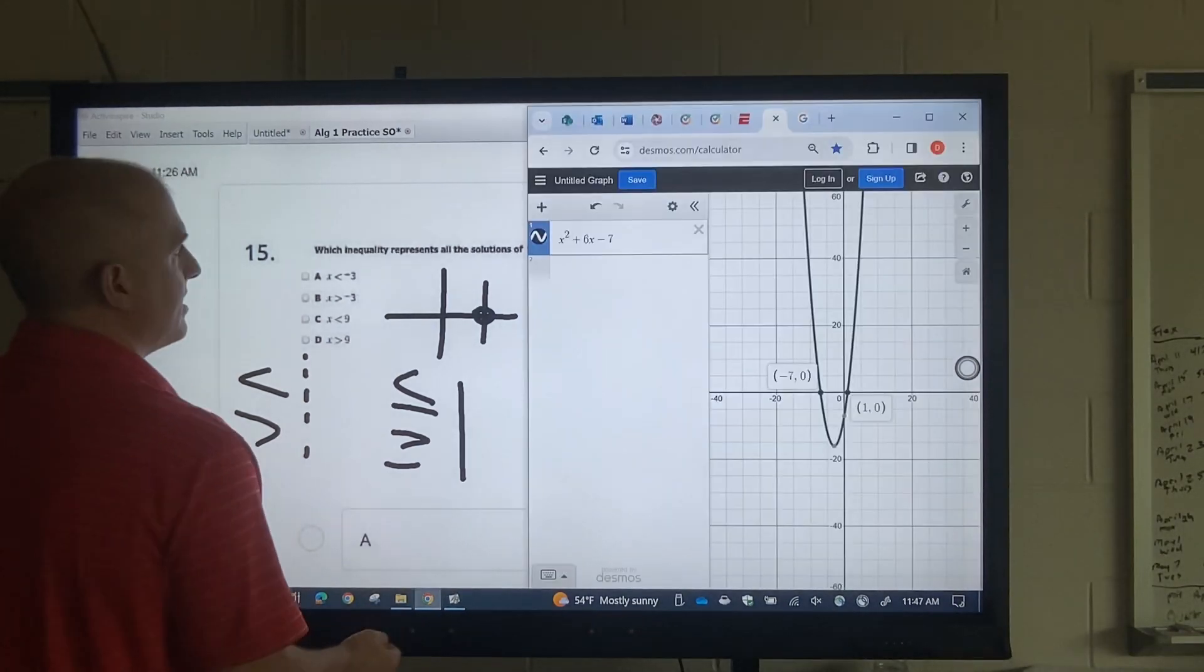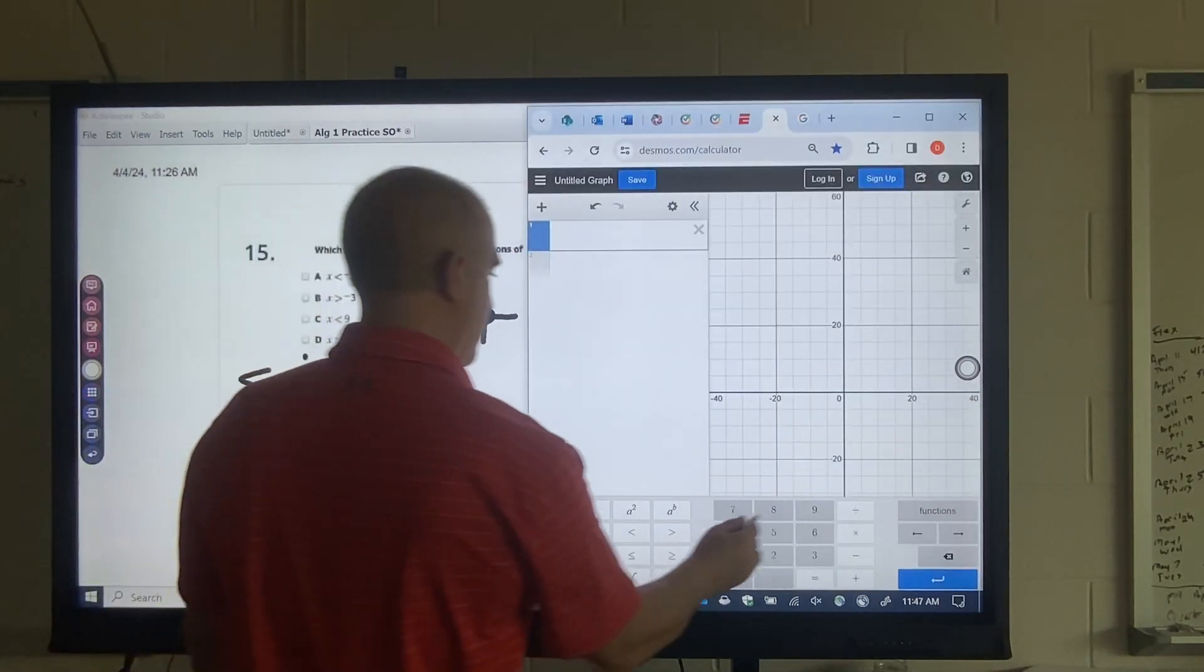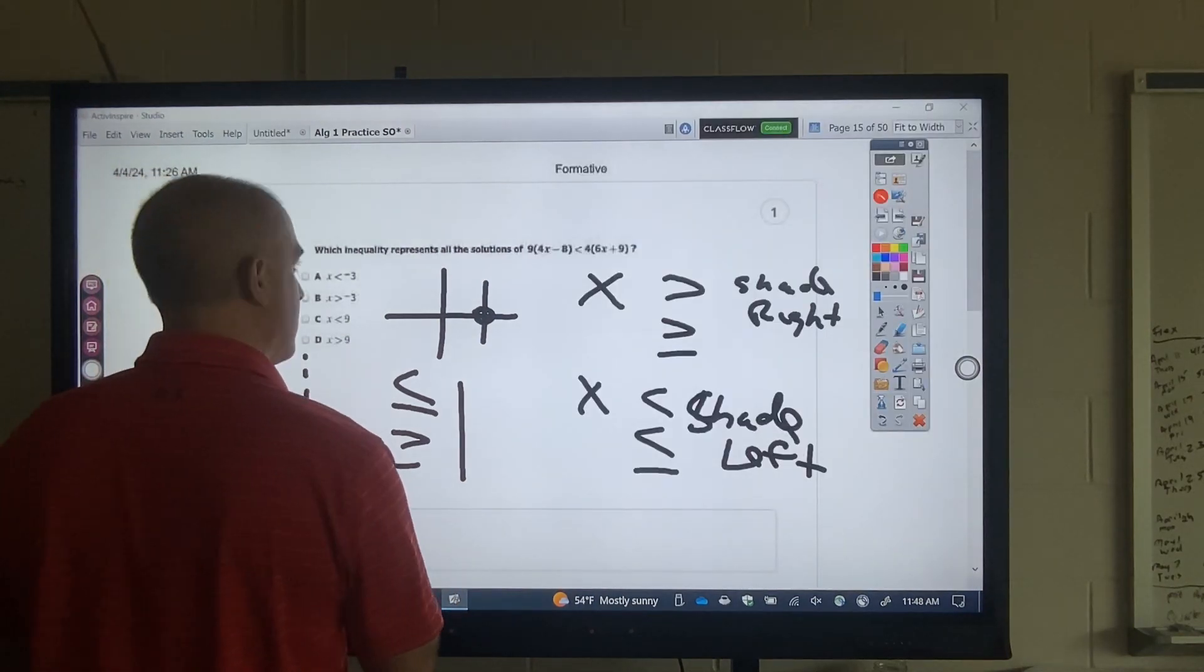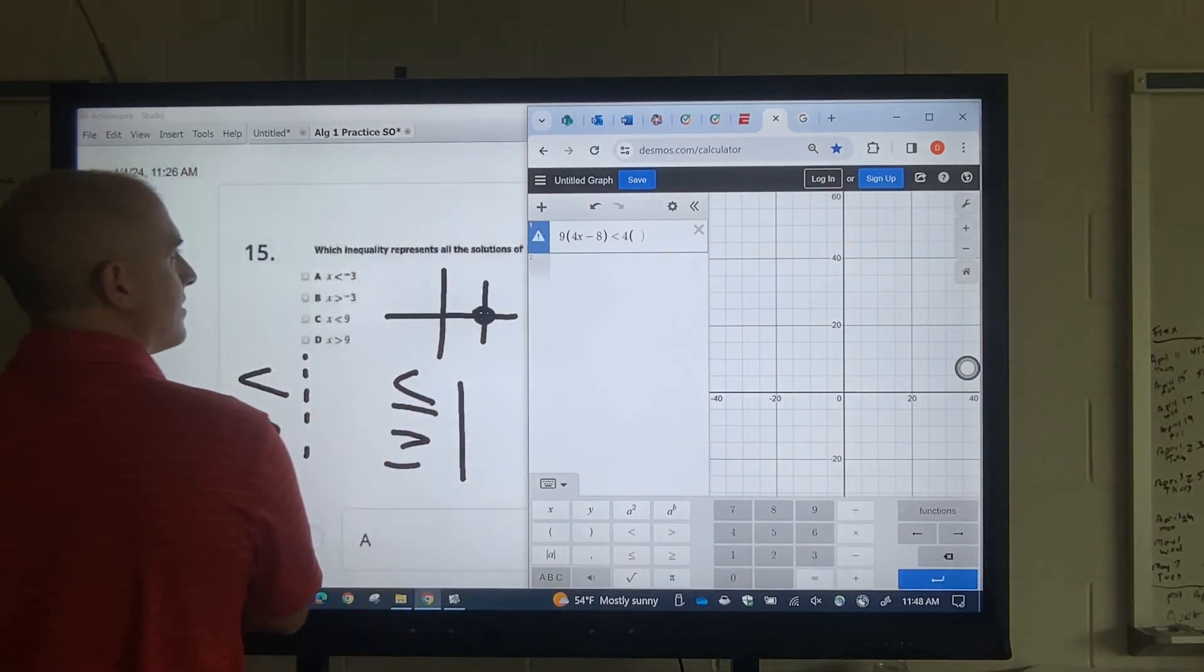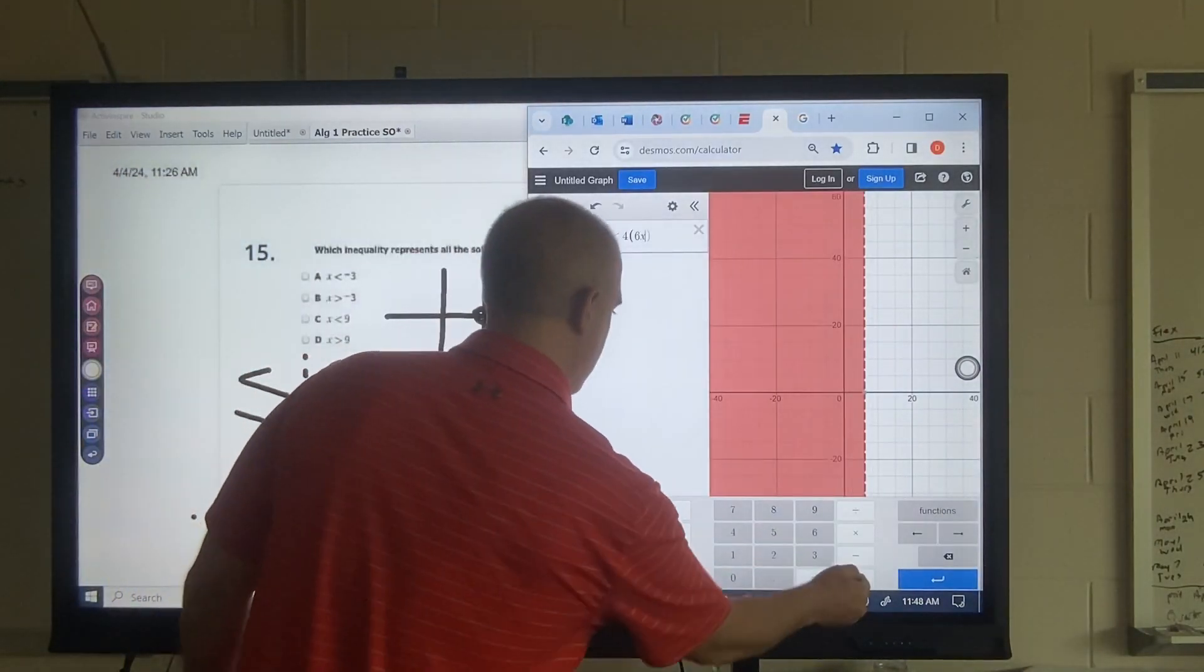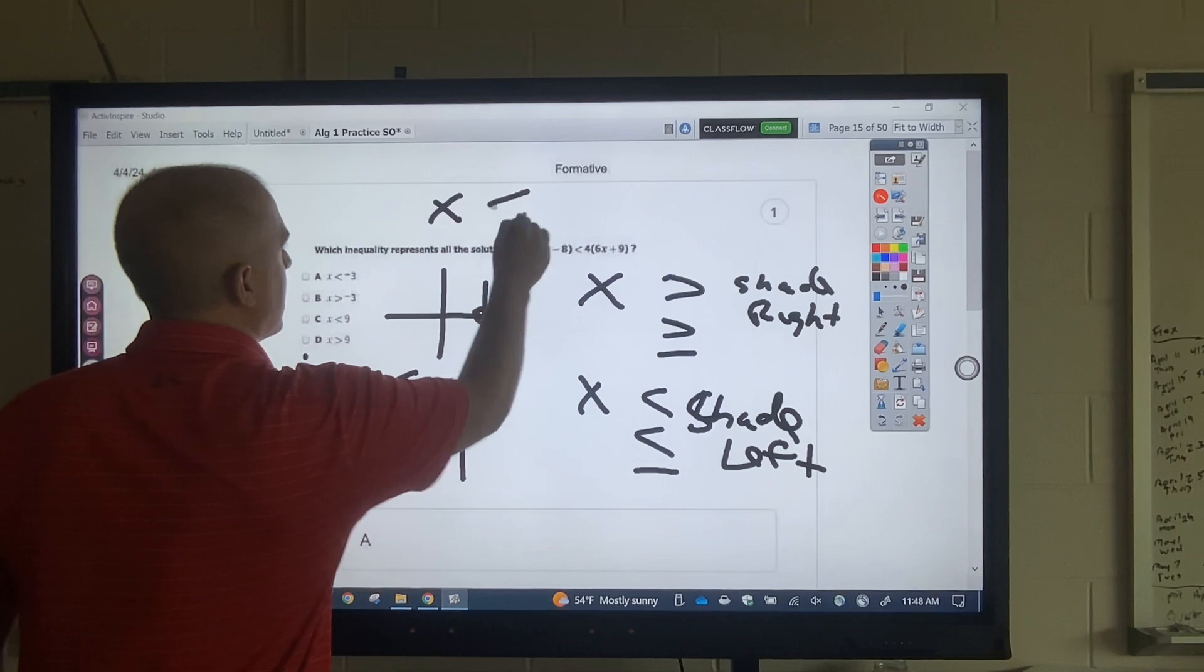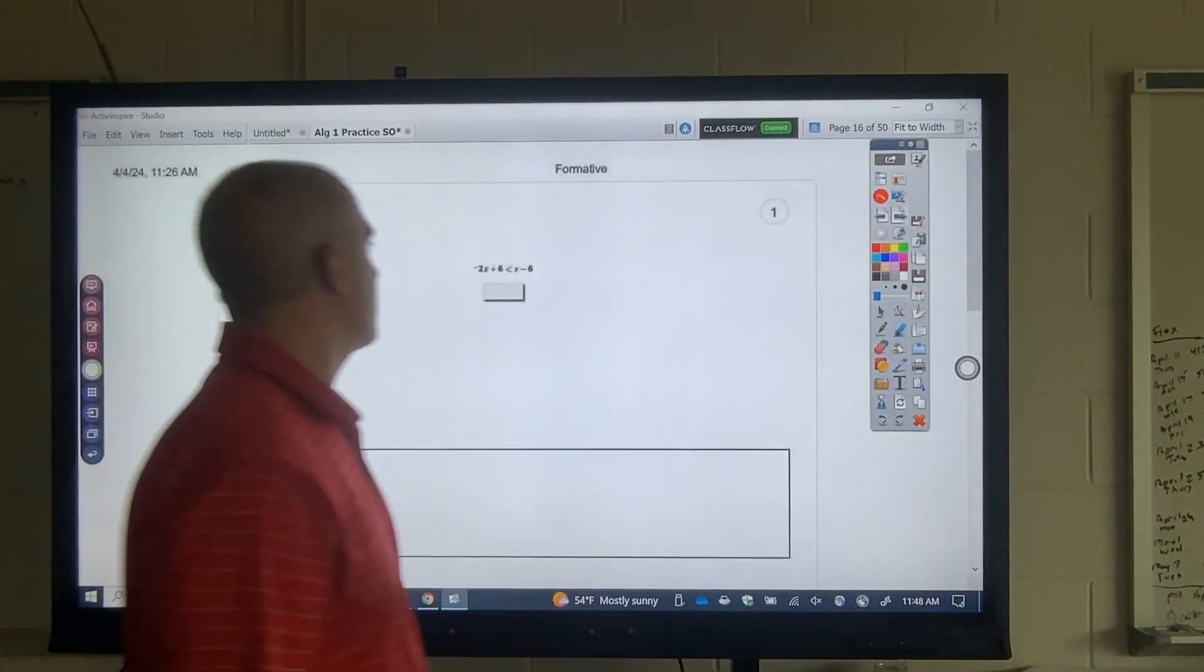So I just got to type this in. That's going to be 9 parentheses 4x minus 8. Okay. Then my inequality is less than 4 parentheses 6x plus 9. Okay. So that's at 9. And since it's being shaded left, it's x is less than 9.